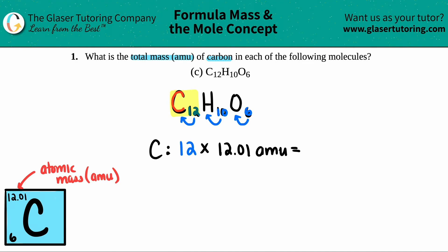So let's get the calculator out and make sure we got this. 12 times 12.01 — that's 144.12. So 144.12 AMU, and that's the total mass in AMU of the carbon. And that's it.